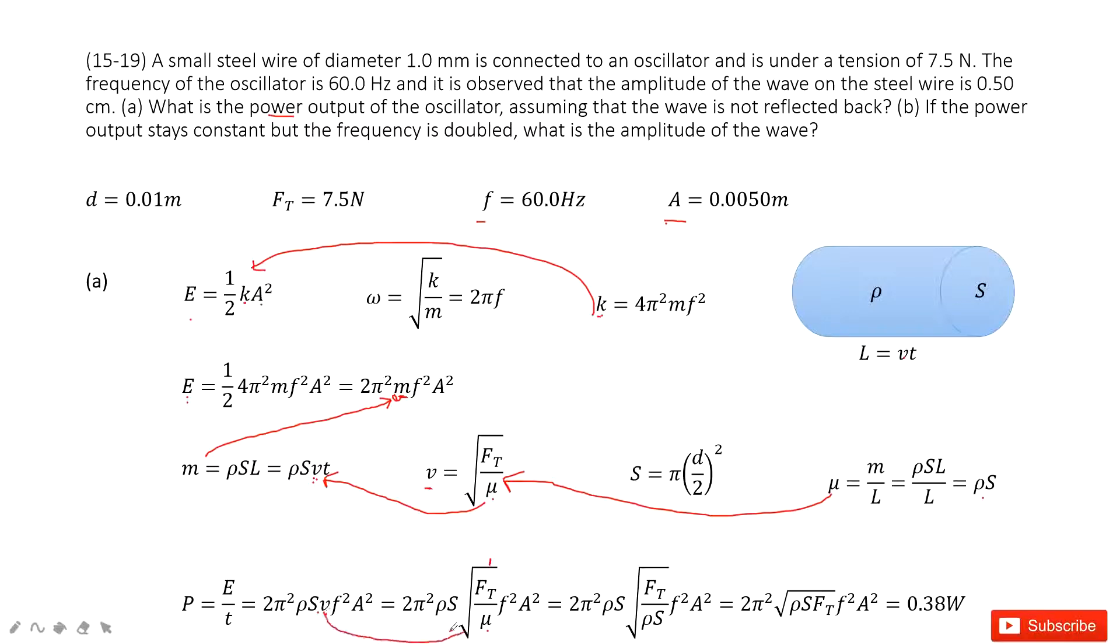So V can be written as square root of Ft divided by μ. And the μ can be written as ρS. And then simplify, it looks like this one.